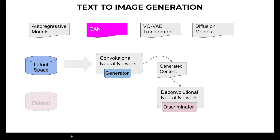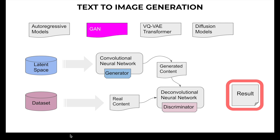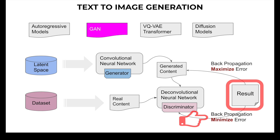The discriminator uses the real dataset and real content to generate its results. The GAN creates its own training data through the latent space, and there is a feedback loop between the adversarial networks. This feedback loop grows through backpropagation — minimizing error in the discriminator and maximizing error through the generated content. Slowly, the generator starts producing higher-quality content, and the discriminator becomes better at flagging artificial data created by the generator.